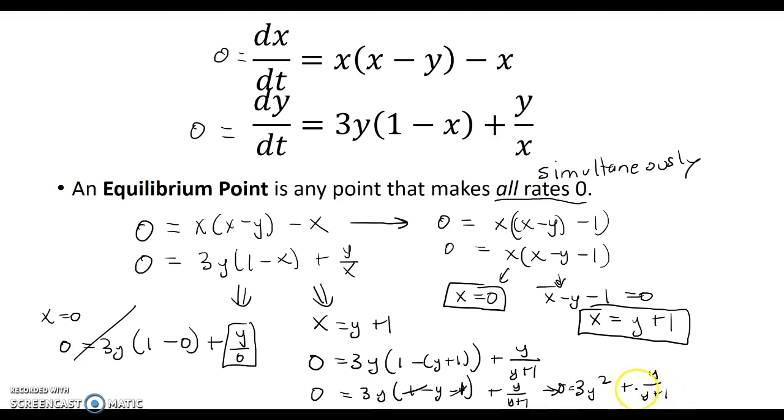It might be obvious at this point that one of the values of y that will work here is y equals zero, because if y is zero, this first term will be zero and the second term will be zero. Moreover, I need to solve this. I see that it's a quadratic. I know that y + 1 cannot be zero, so y cannot be negative one here. What I'm going to do is factor out a y from both terms, and I'll have y(3y + 1/(y + 1)).